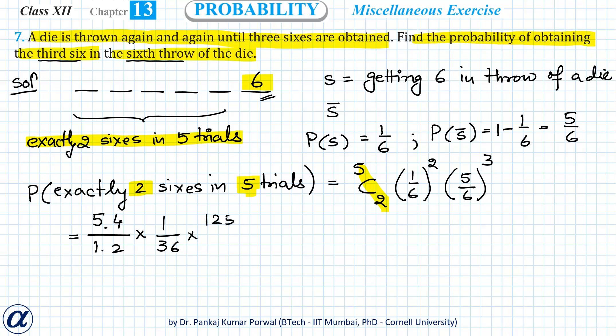This I can simplify: 2 goes into 4 twice. If I multiply all the numbers, I get 625 divided by 3888. That is my answer.